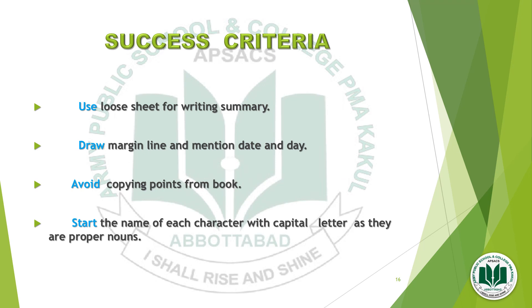At the end of today's literature session, let's discuss success criteria before starting home assignments. Success criteria: use loose sheets for writing the summary, draw a margin line and mention the date and day, avoid copying points from books, and start the name of each character with a capital letter as they are proper nouns.